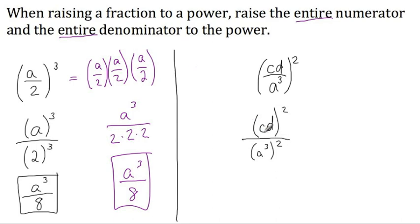There are two factors here, a c and a d. We need to raise the c to the power, which is 2, so that's going to give us c squared. And we need to raise the second factor to the power, that's d, and the power is 2, so that'll be d squared.